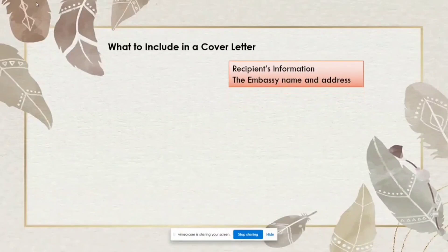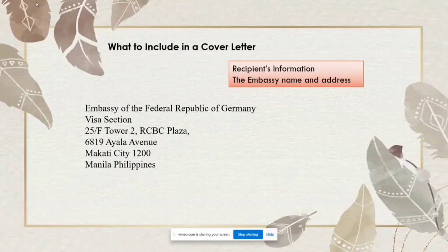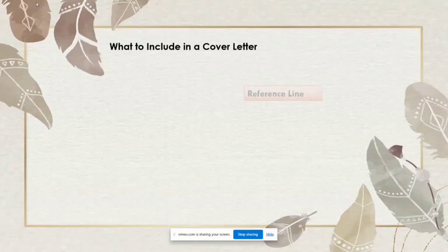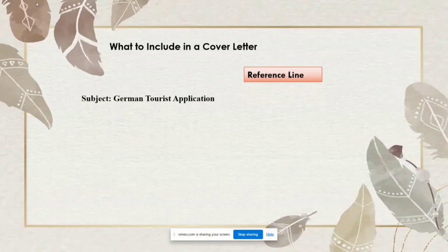The next step is to write the recipient's address and name — the embassy name and address. Please don't put VFS or a VFS address in your cover letter, because VFS is not the one checking your documents and is not responsible for your visa stamping. Write your embassy's name and address. For example, since I will be traveling to Germany, I wrote 'Embassy of the Federal Republic of Germany' and the complete address.